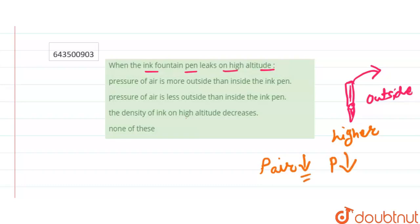And if the pressure reduces, then outside pressure is lesser but inside pressure is more. And because of this higher pressure, ink comes out. So pressure of air is less outside than inside the ink pen, and this option is the correct option.